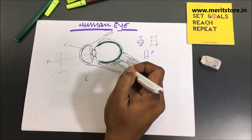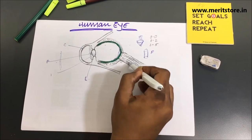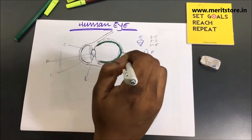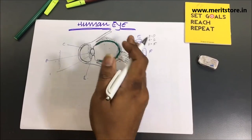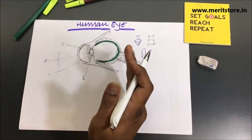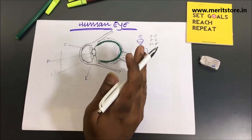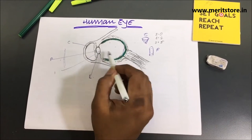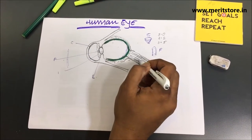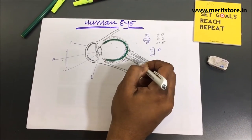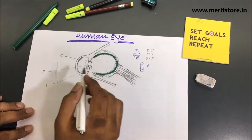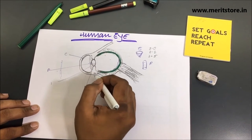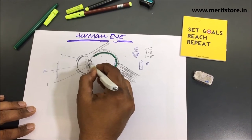These electrical signals are passed by the optic nerve to the brain. The brain then interprets these signals and processes the information in such a way that we perceive and understand what we see. The focal length of the human eye is about 2.5 centimeters.